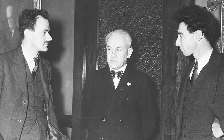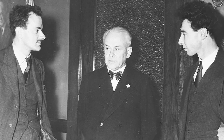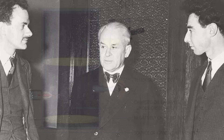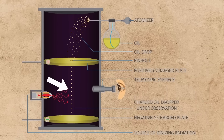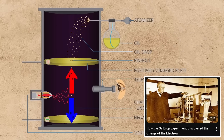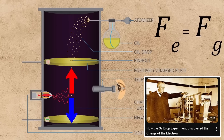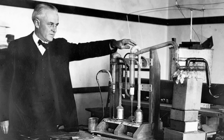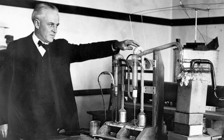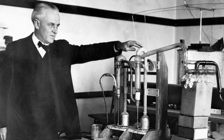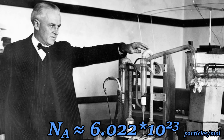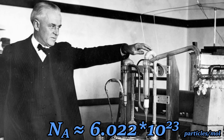The number would be refined even further in 1913 in a paper published by Robert Millikan, in which he calculated the value through his experimentally found value of the charge of an electron. As the value of the charge of the electron has been refined further and further throughout history, so has Avogadro's number, and today it rests at a value of 6.022 times 10 to the 23rd units per mole.